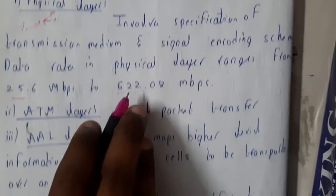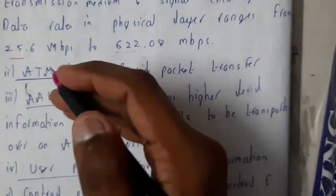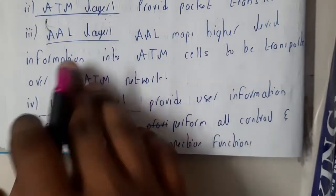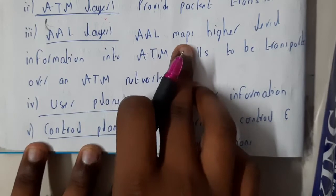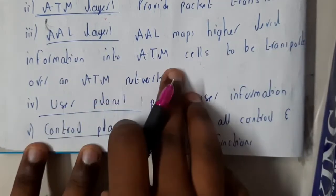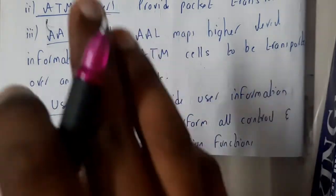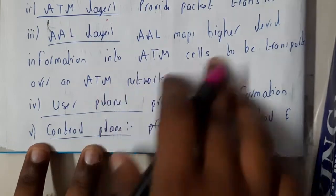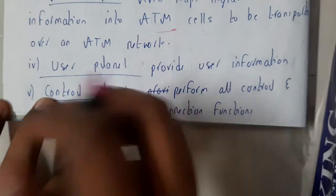The second layer is the ATM layer. It transfers packets from the physical layer to the adapter layer — AAL stands for ATM Adapter Layer. Here, higher-level information is mapped into ATM cells to be transported over the ATM network, dividing data into ATM cells before passing it to upper layers.